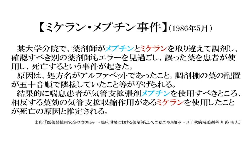皆さんは、ミケラン・メプチン事件をご存知でしょうか。その事件は、昭和の時代に起こりました。これは、β2刺激薬であるメプチンと、β遮断薬であるミケランが取り違えて調剤され、それを服用した患者が亡くなってしまうという事件でした。現在でこそ、ミケランはハイリスク薬に属していますが、当時としては、毒薬でも劇薬でもない薬で、患者が亡くなってしまうという事実に、世間は衝撃を受けました。